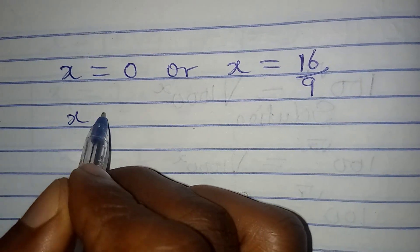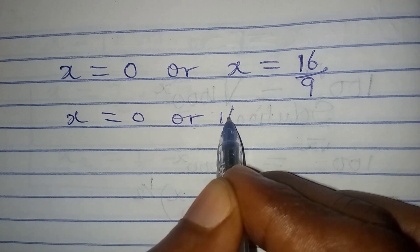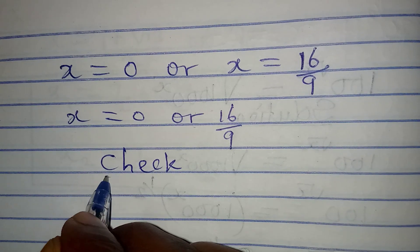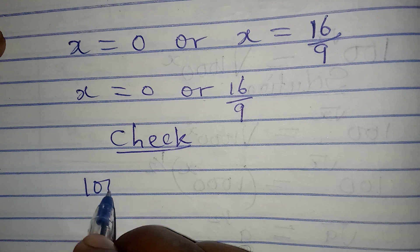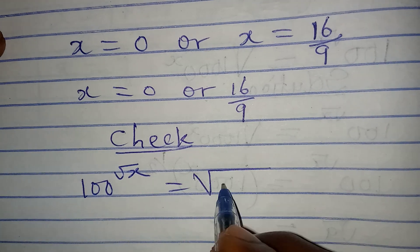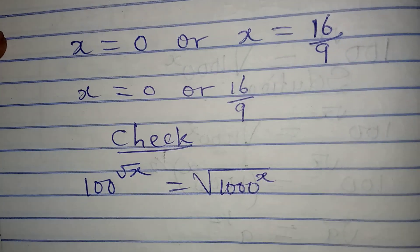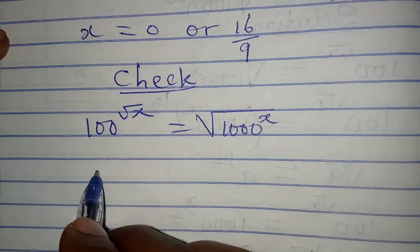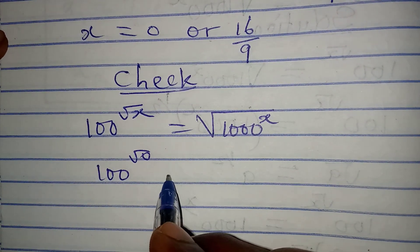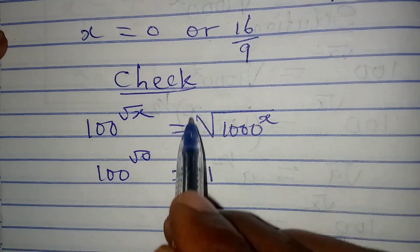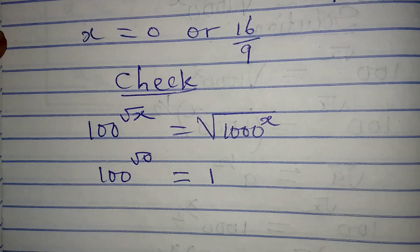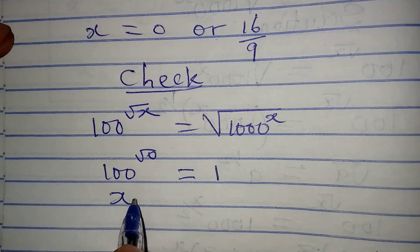So X equals 0 or 16 over 9. Now let's check whether we are right. The original equation is 100 to the power of root X equals square root of 1000 to the power of X. If we put zero in, we have 100 to the power of root 0, which automatically gives us 1, and on the right side we also get 1. So X equals 0 is correct.